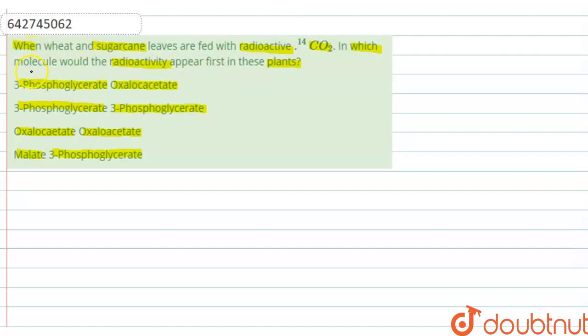The first part of each option is for wheat and the second part is for sugarcane. First, we need to know about these two plants. Wheat is a C3 plant and sugarcane is a C4 plant.